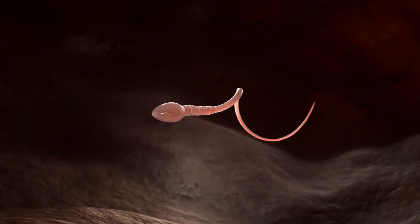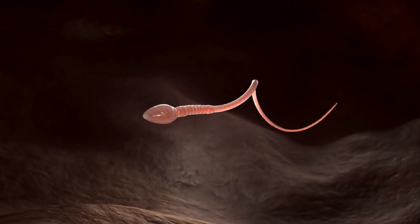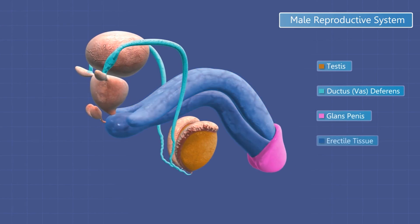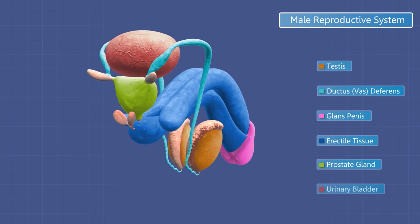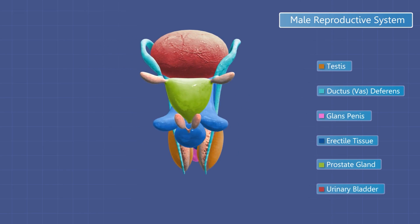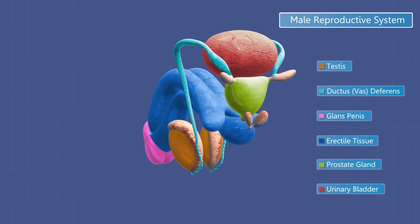Once in the epididymis, sperm stay there until sexual arousal occurs. Once arousal occurs, those sperm are moved to another tubular structure called the vas deferens. You may have heard of the vas deferens because that's the structure that's cut during a vasectomy. The vas deferens is a very long structure — about 30 centimeters long.